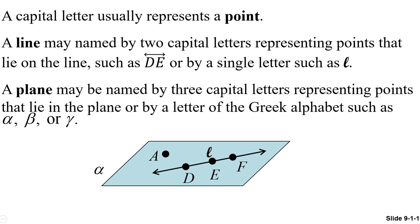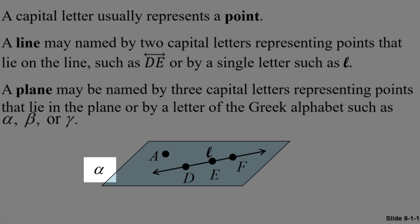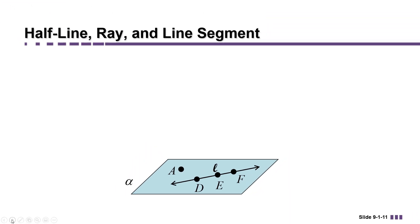Or, to make it simpler, I could give it its own name. We often use the Greek alphabet to do that. For example, here I've labeled the plane alpha. Some other geometric objects that we will be discussing are portions of lines.